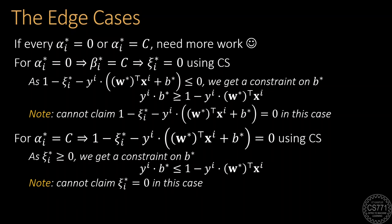Note that we cannot claim xi*_i equal to 0 in this case, since complementary slackness only tells us that beta*_i times xi*_i is equal to 0. And since beta*_i is already equal to 0 in this case, xi*_i is free to take non-zero values.